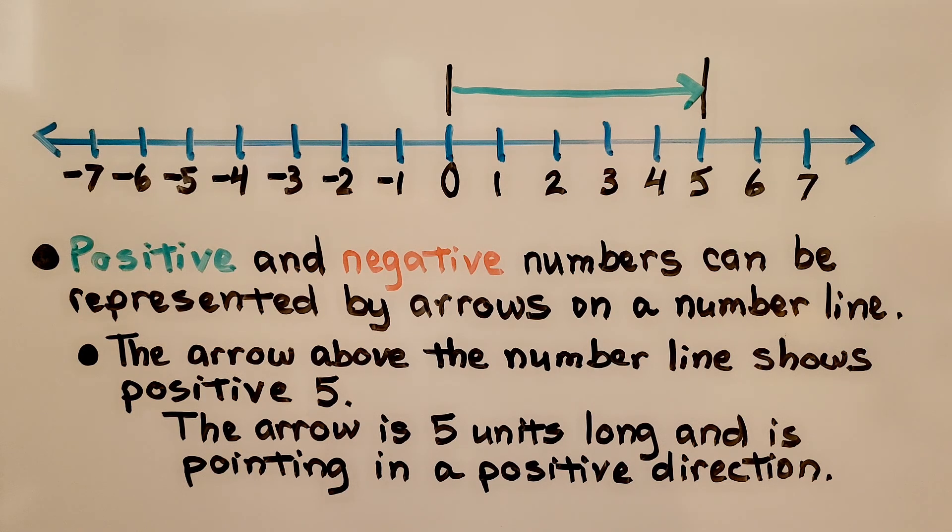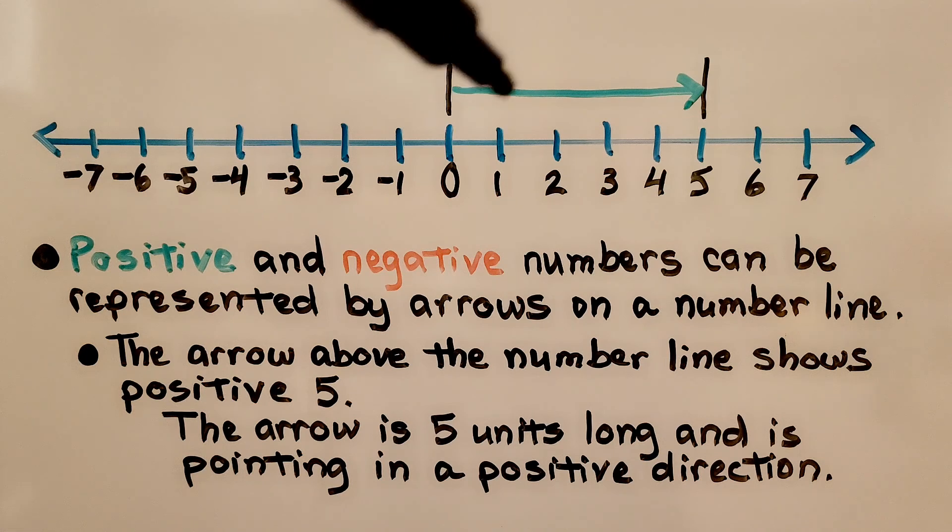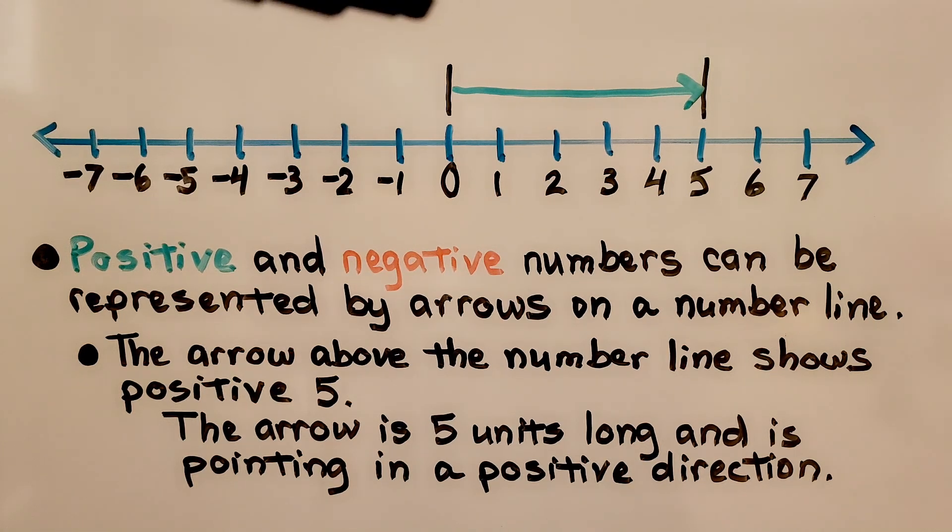Positive and negative numbers can be represented by arrows on a number line. The arrow above the number line shows positive five. The arrow is five units long and is pointing in a positive direction.